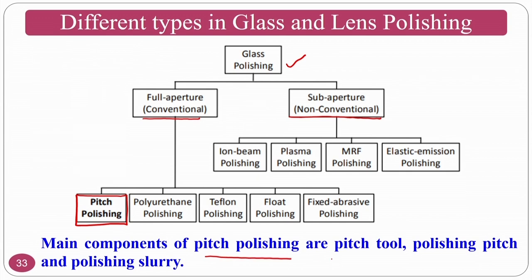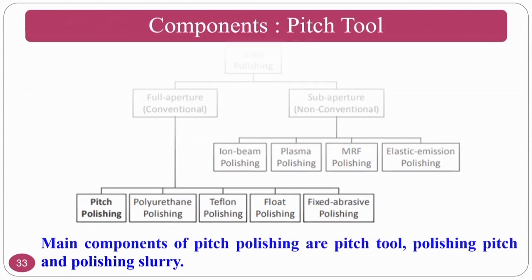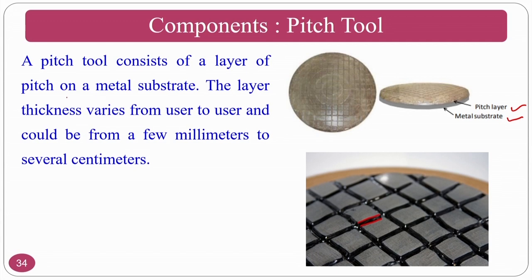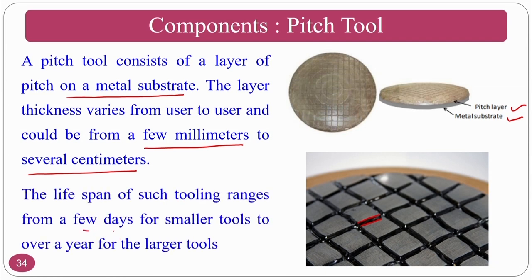The main components of pitch polishing are the pitch tool, the polishing pitch, and the polishing slurry. The pitch tool has a pitch layer on a metal substrate to which load is applied. Grooves on the tool allow generated micro- or nano-chips to collect without disturbing the finishing process. The pitch layer thickness varies from a few millimeters to several centimeters, and tool lifespan ranges from a few days for smaller tools to several years for larger tools.